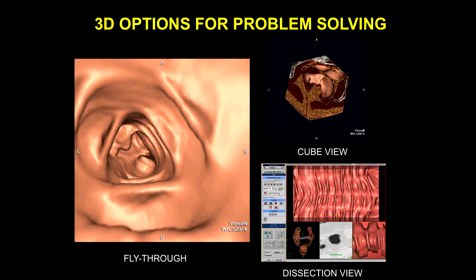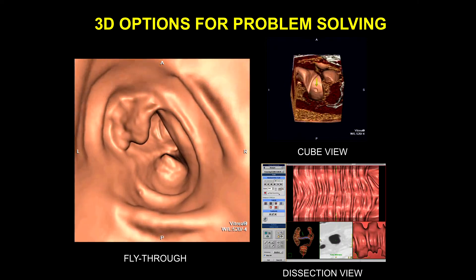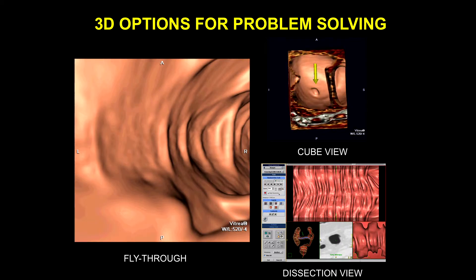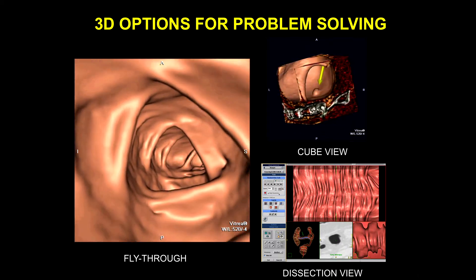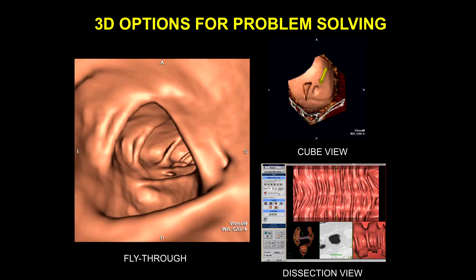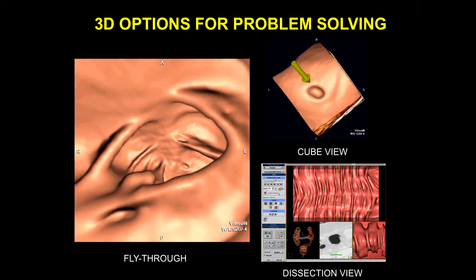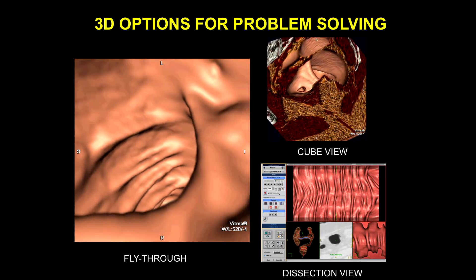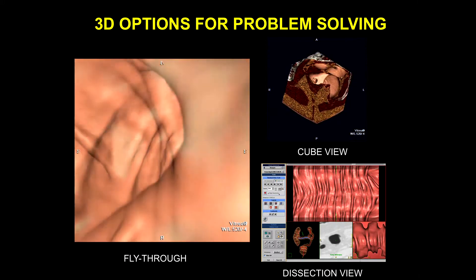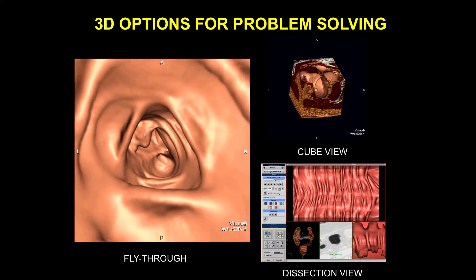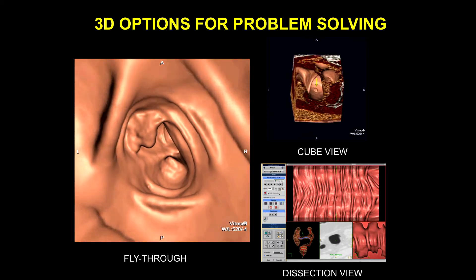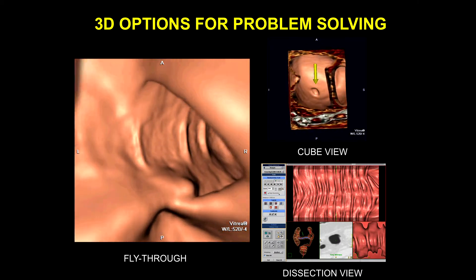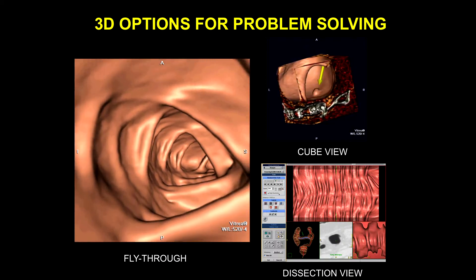The various options on your 3D include your traditional fly-through. This is a carcinoma that we're just flying by, and then multiple polyps beyond that. You have your sub-volume cube view, which you can rotate 360 degrees — it's a nice way to easily problem-solve lesions. And then one of the more novel views is your dissection view, which I'll talk a bit more about later.